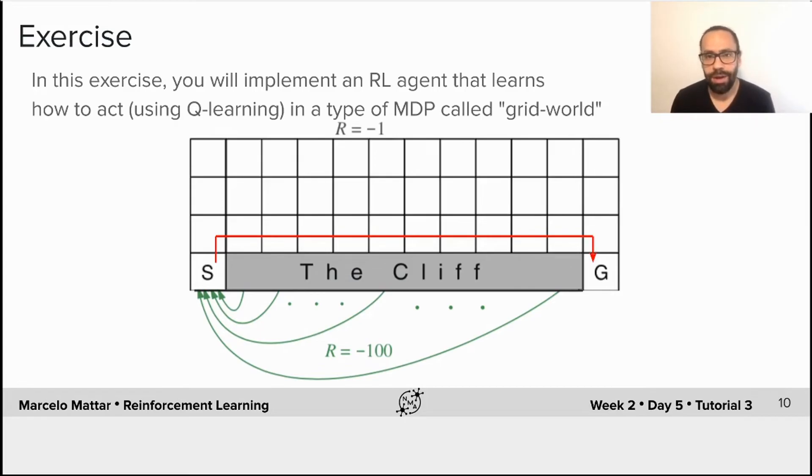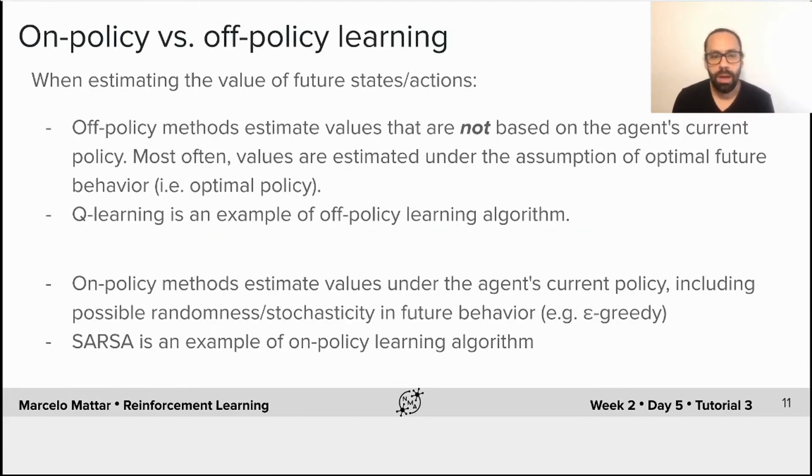And you should see that if you implement things correctly, Q-learning specifically, the agent should learn that the best action to execute in state S is to go north, and then in order to reach the goal in the fewest number of steps, the best action will be to walk along the edge of this cliff, followed by an action going south to finally reach the goal.